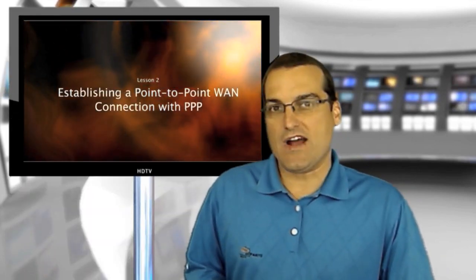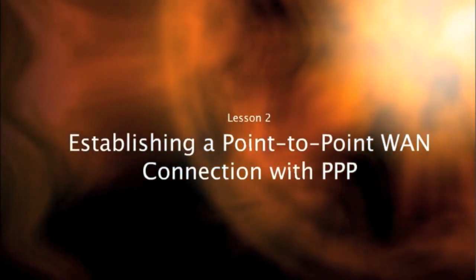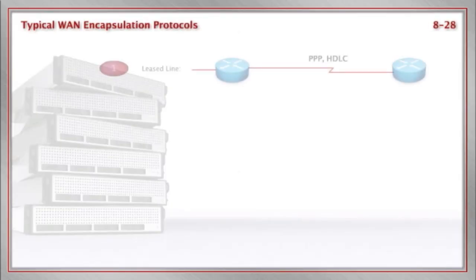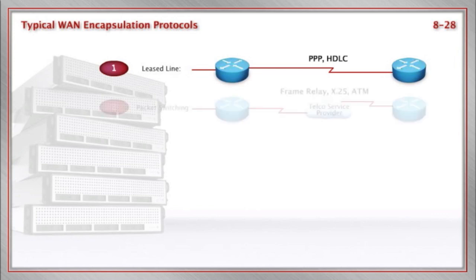We know that IPsec is critical for creating virtual private network connections, but what other types of protocols are we going to be utilizing in a wide area network environment? Certainly one of those is PPP. A lot of jokes around networking often say this is the planet's most popular protocol. With PPP, we can encapsulate data over a leased line, where we don't want to share the WAN connection with anyone, and we send it over a private circuit leased from an internet service provider.